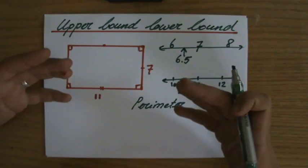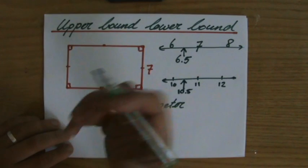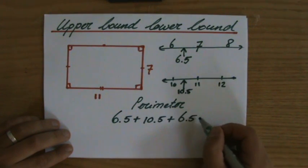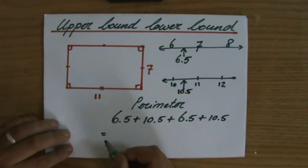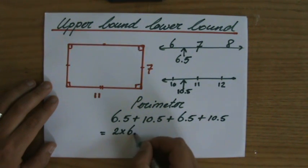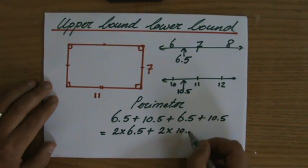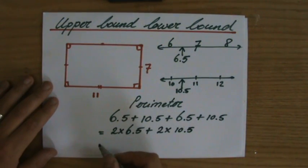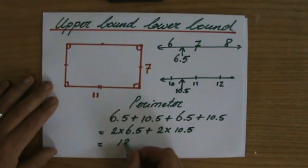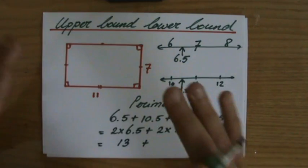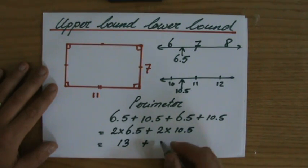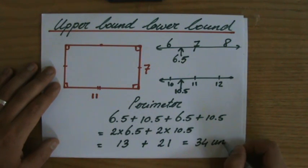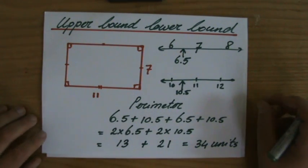Now I calculate the perimeter using the lower bound values. The lowest possible perimeter is: six point five plus ten point five plus six point five plus ten point five. Some of you will say two times six point five plus two times ten point five — that is excellent. Two times six and a half is thirteen units, and two times ten and a half is twenty-one units, so the lower bound of the perimeter is thirty-four units.